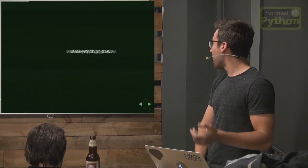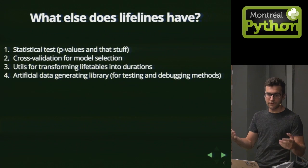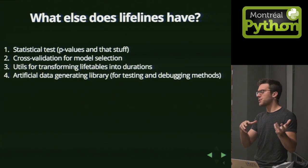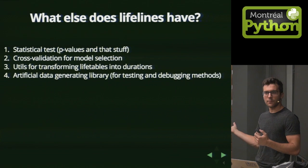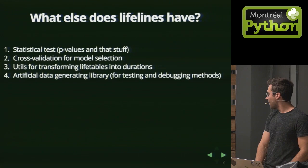What else does Lifelines have? It's got statistical tests like p-values, cross-validation for model selection so you can vet your regression models and make sure they're not overfitting, some utilities for transforming life tables into durations and back, and some artificial data generating functionality — that was more a leftover from when I was testing it locally to make sure my model would fit an artificial dataset perfectly.